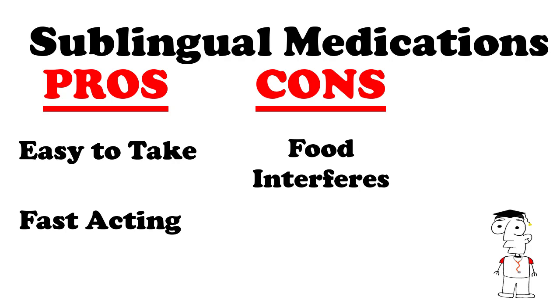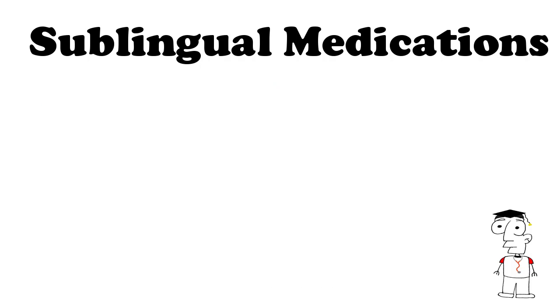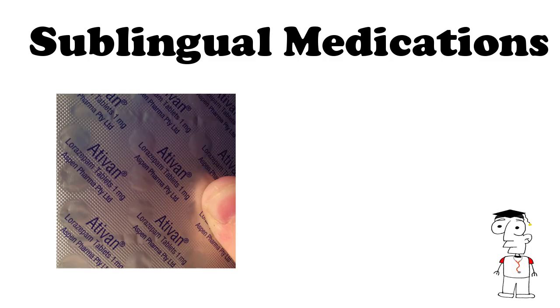Cons are that eating and drinking can interfere with absorption, and there's no controlled release option as it's absorbed very quickly. Could you imagine taking five to ten pills every single morning sublingually? You'd be placing the pills under your tongue and waiting for them to dissolve — it's a lot easier to just swallow them and go on with your day. Some examples include Ativan and some nausea medications for people with cancer.